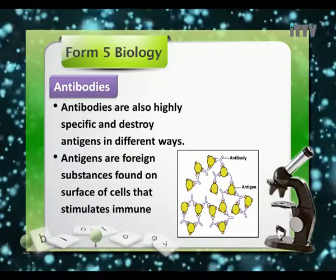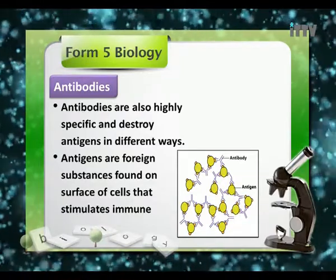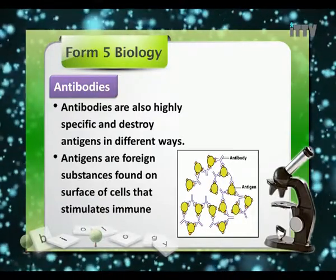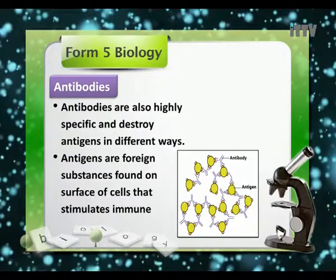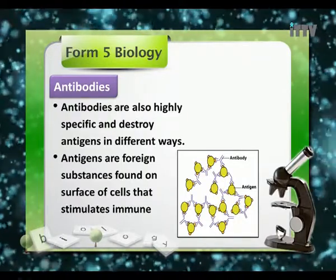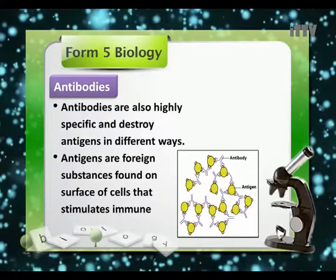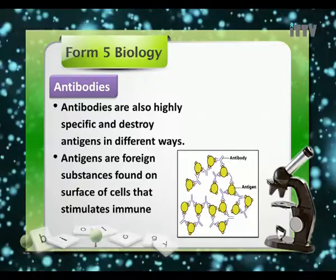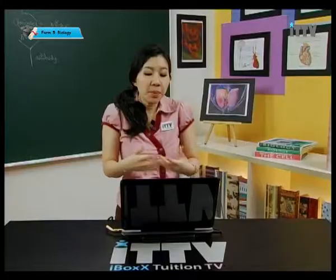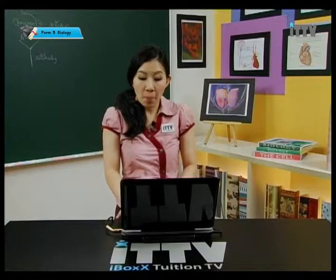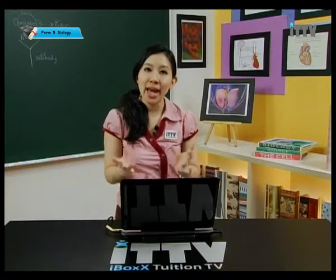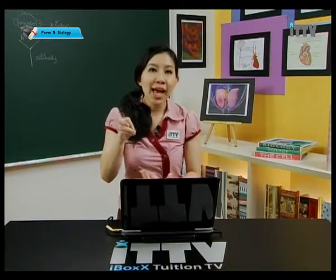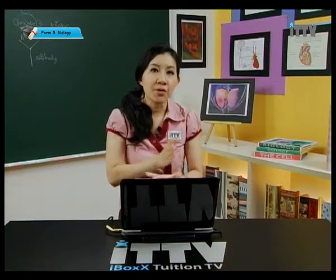Antibodies are highly specific and they destroy antigens in different ways. Antigens are foreign substances found on the surface of cells that stimulate immune response or formation of antibodies. The cells could be pathogens or even toxic substances and certain poisons, which we categorize as antigens recognized by specific types of antibodies. Different antigens have different types of antibodies.